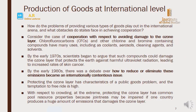We will now apply all four types of domestic production of goods at the international level. We need to see how the problems of providing various types of goods play out in the international arena, and what obstacles states face in achieving cooperation regarding the exchange of these goods. An example can be given of cooperation with respect to avoiding damage to the ozone layer.